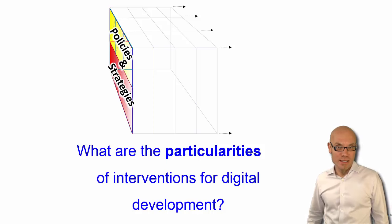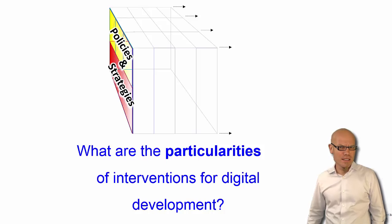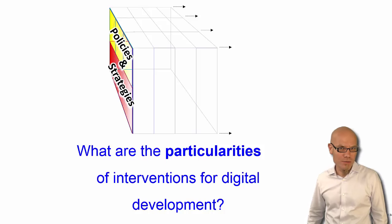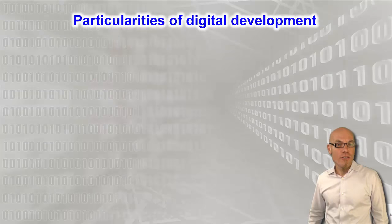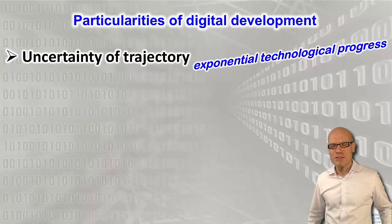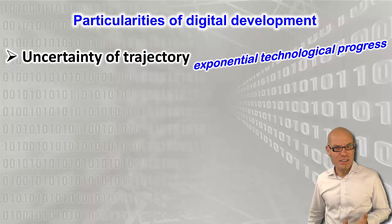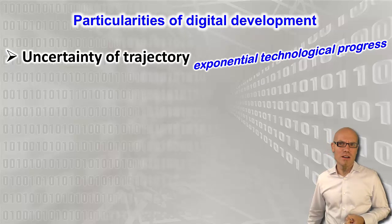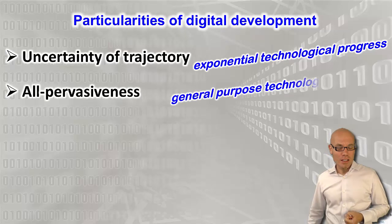Let's look at some of the particularities that we have to consider when we design and implement interventions for digital development, be they public policies or private strategies. First of all, we are dealing with exponential technological progress, and that leads to an unfathomable level of uncertainty of the future and of the trajectory that we are on.